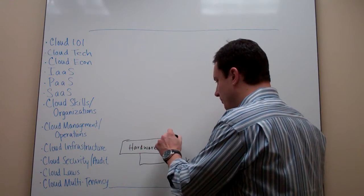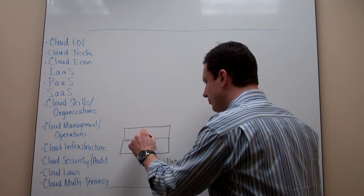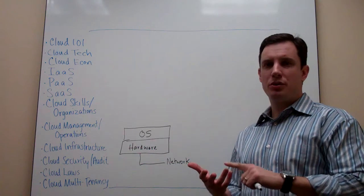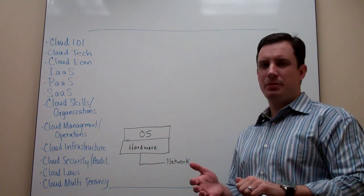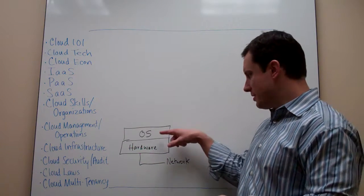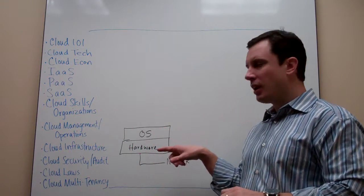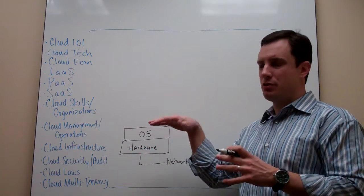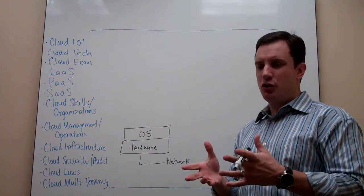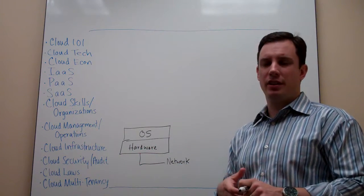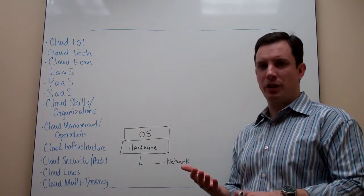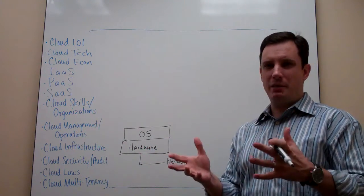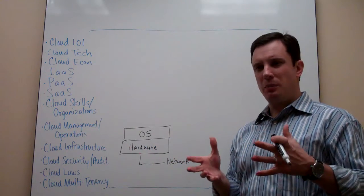On top of that hardware, you have an operating system. We're familiar with things like Linux and Windows and Unix. The operating system provides two things: one, it provides a way to manage the hardware, and it also provides a way to manage the application — to allow the application to leverage the hardware resources underneath it. So for the application to manage memory, be able to access the CPU, the network resources, naming, and all those other things — that's what operating systems do.